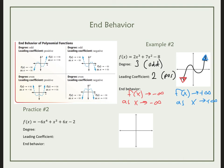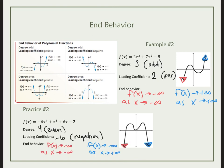For the last practice question, pause the video and try practice question number 2 on your own. Check your work: this is an even degree and it's negative, which means both endpoints are going to be facing down. On the left side, my function is approaching negative infinity as x approaches negative infinity. In blue, this function is also going down forever, and on that side of my graph, x is always approaching positive infinity.